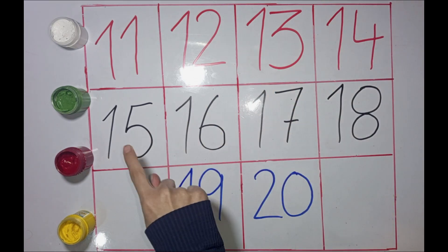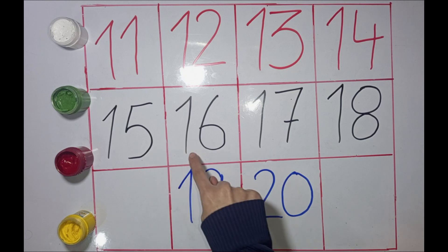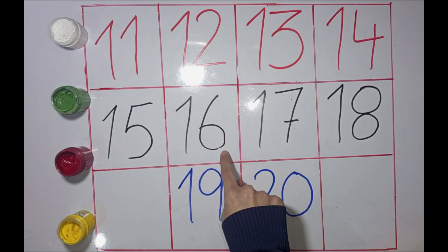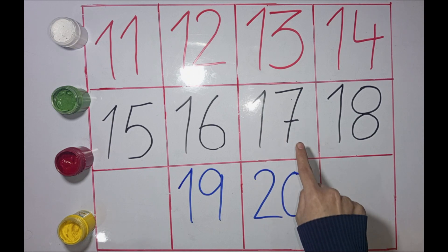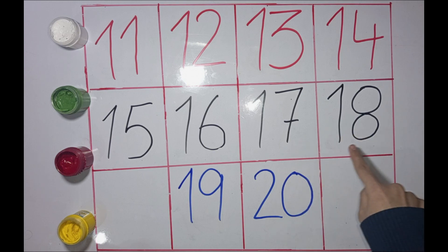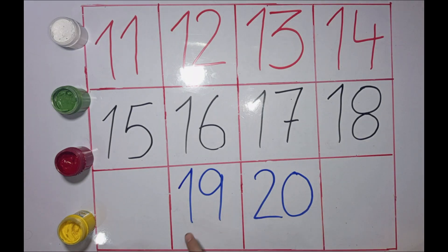1, 5, 15. 15 dolphins. 1, 6, 16. 16 cats. 1, 7, 17. 17 horses. 1, 8, 18. 18 games.